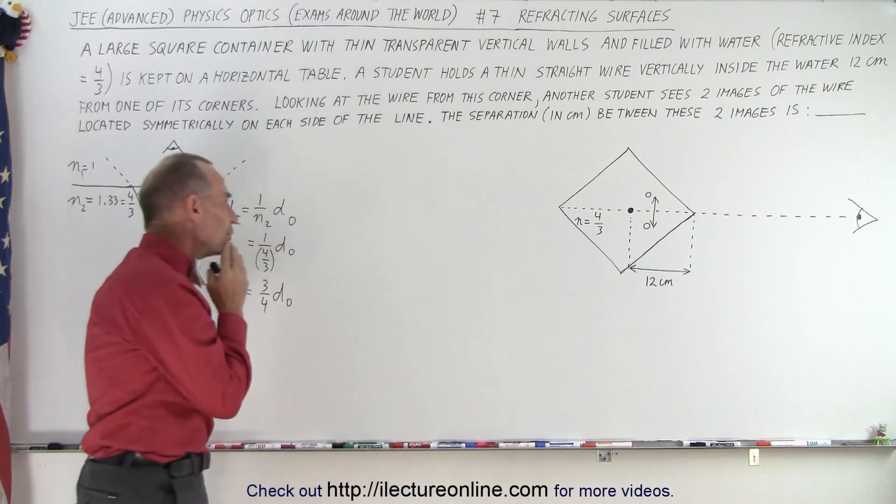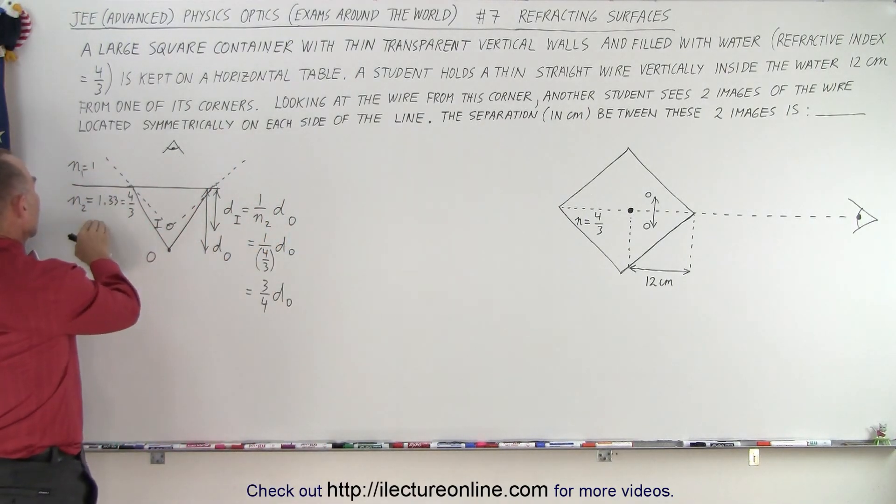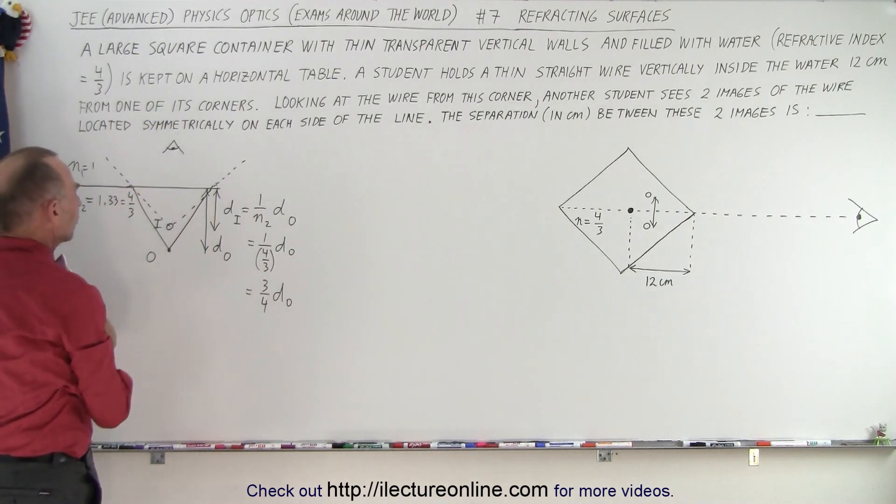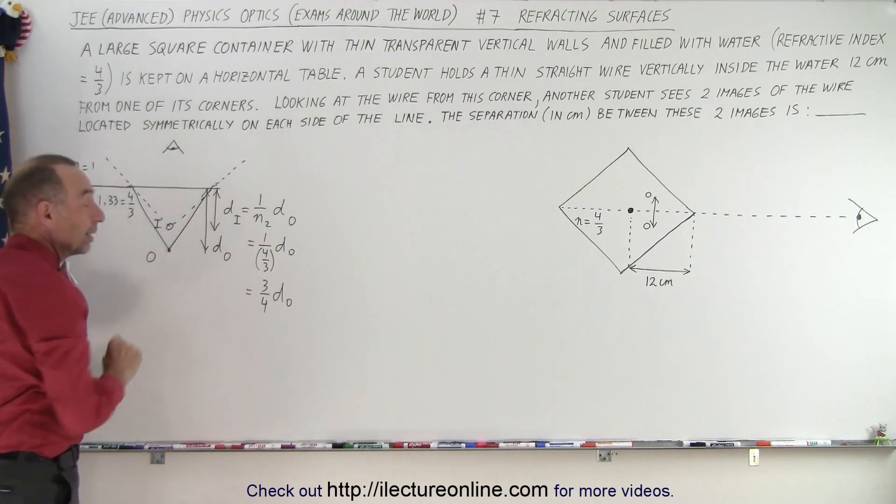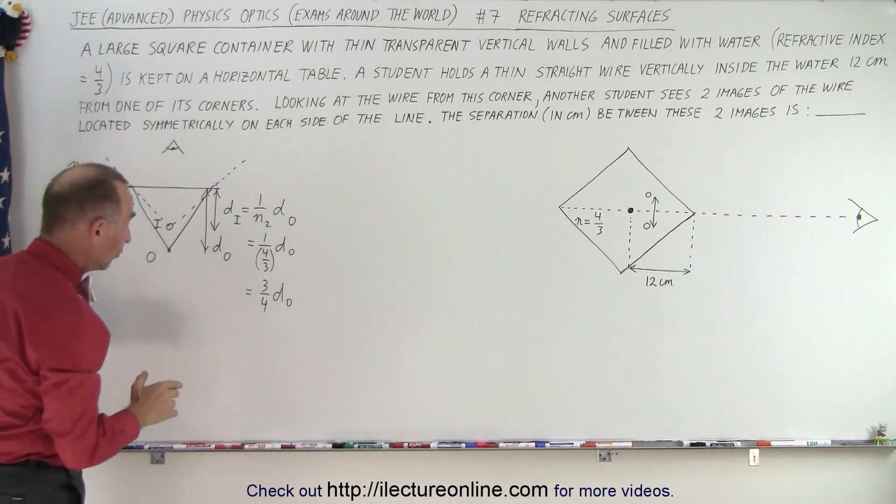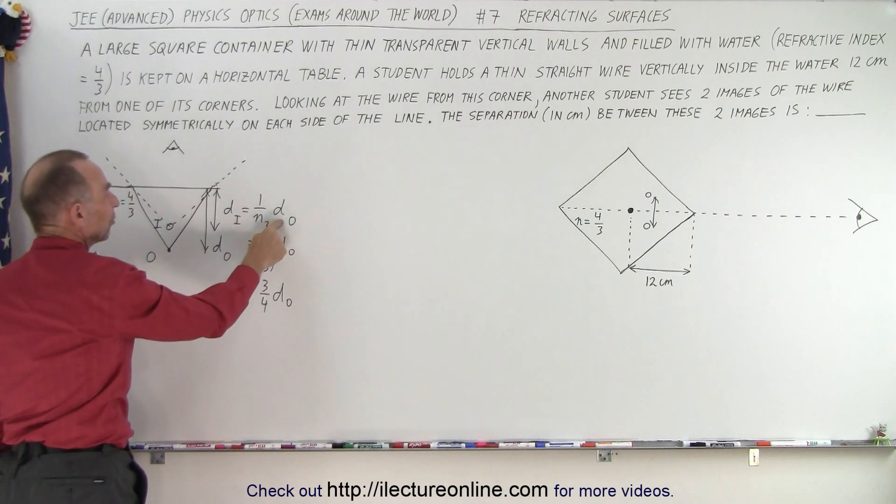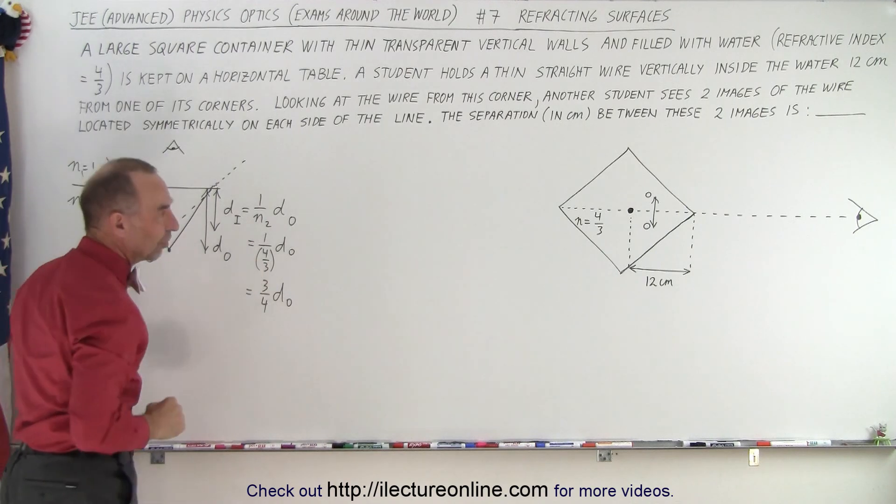I was thinking about it this way. If we look at the refractive index of water and the refractive index of air above it, we have the observer looking straight across. When we have an object at a certain distance below the surface, the observer will see an image closer than where the object is. The distance to the image as seen by the observer is equal to 1 over the index of refraction of the water times the distance. In this case, it would be 1 over 4 thirds or 3 quarters the distance.